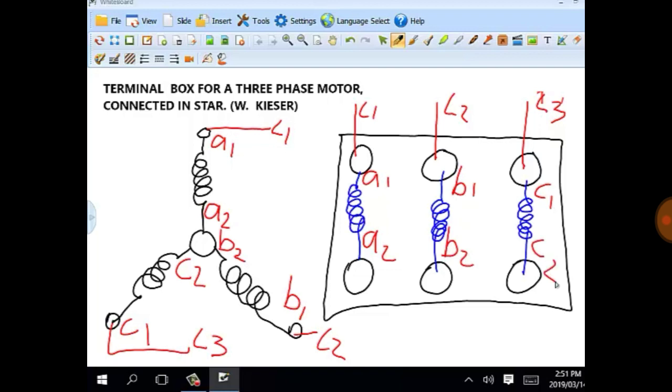B2 and A2 is making contact, so bridge A2 and B2. C2 and A2 is making contact, therefore we will bridge B2 and C2.